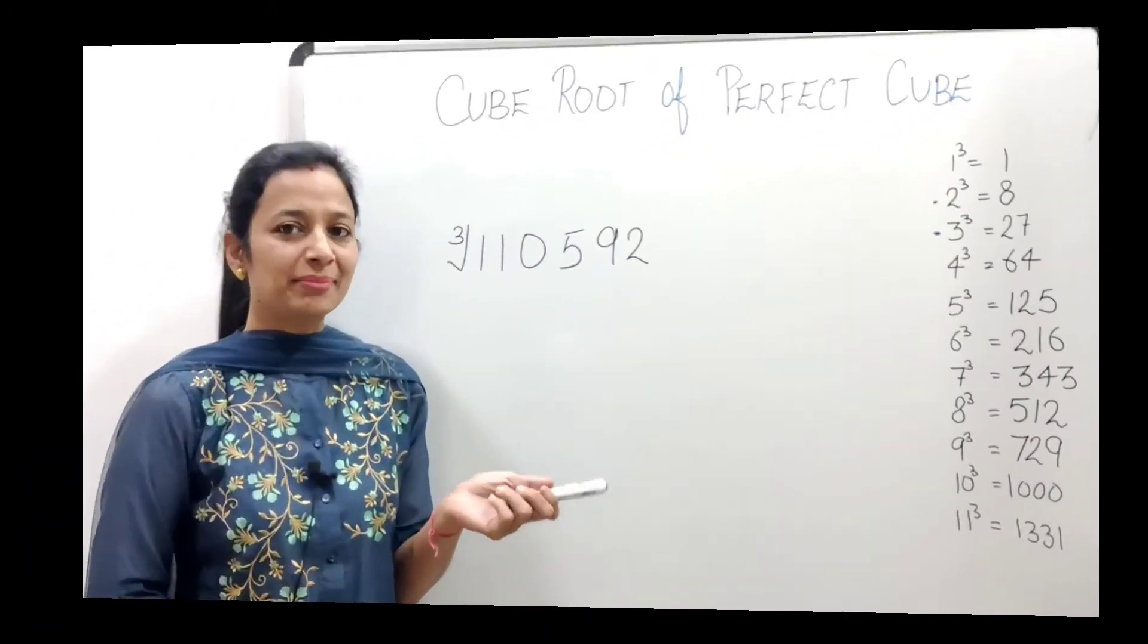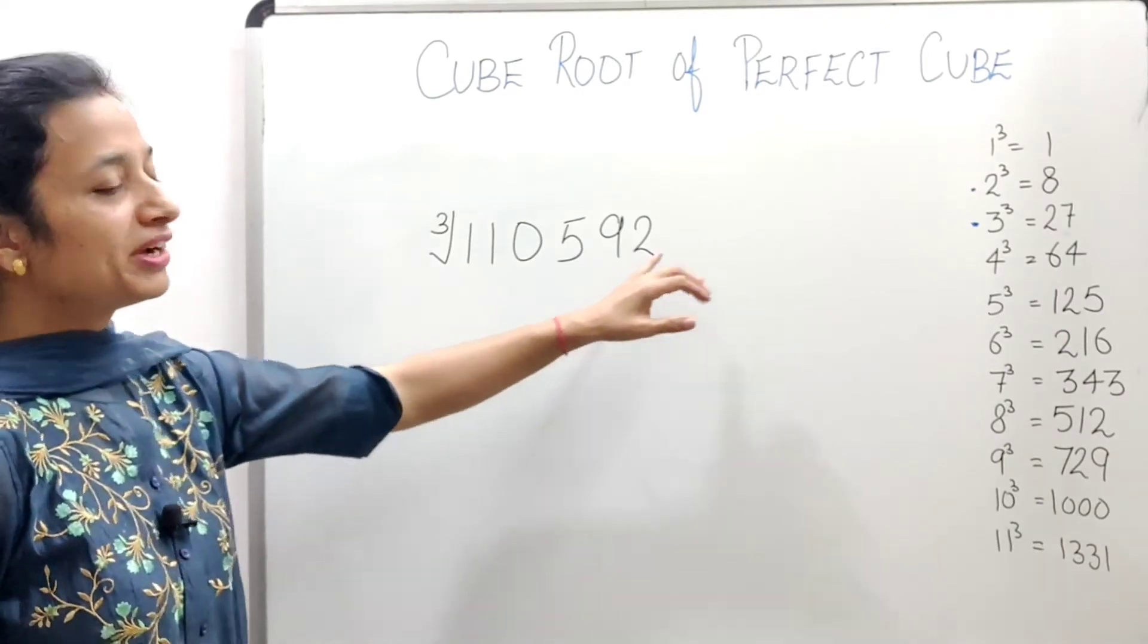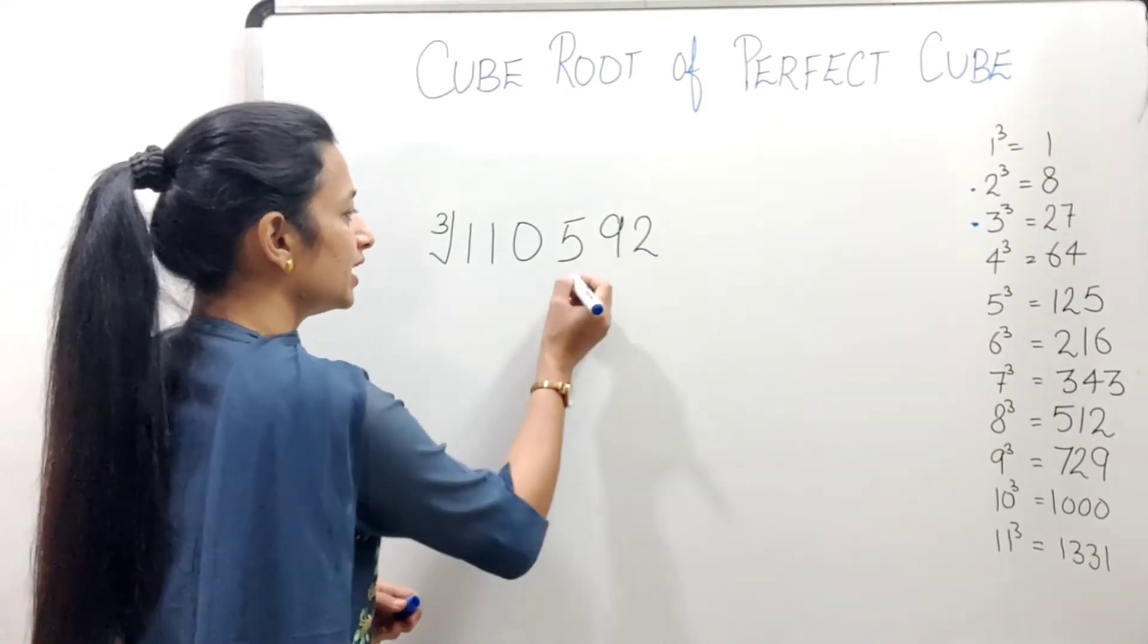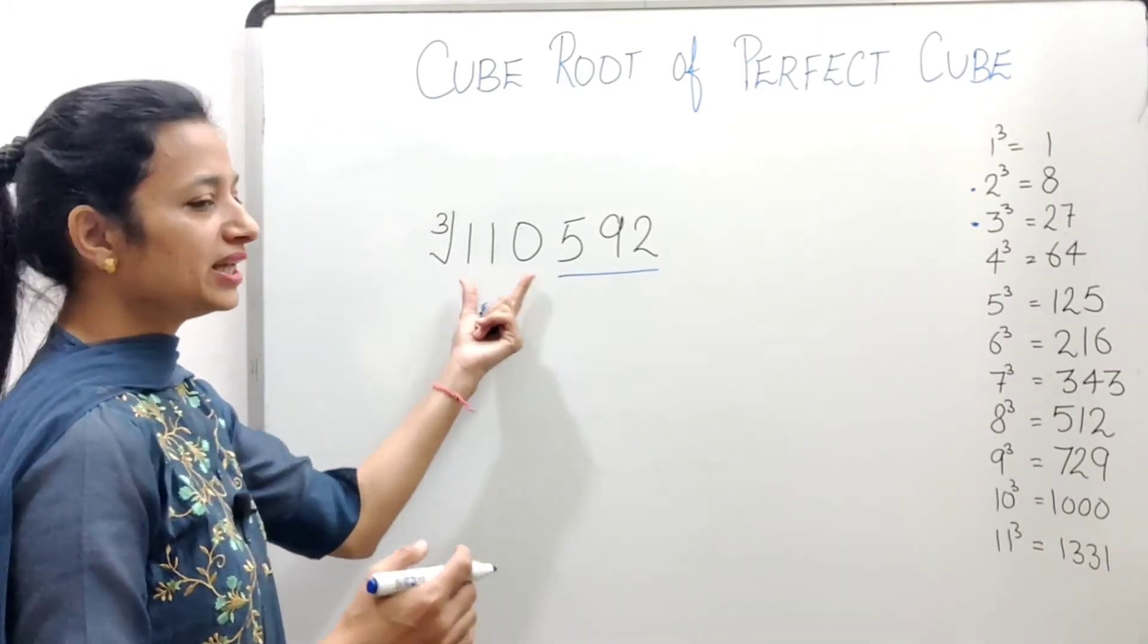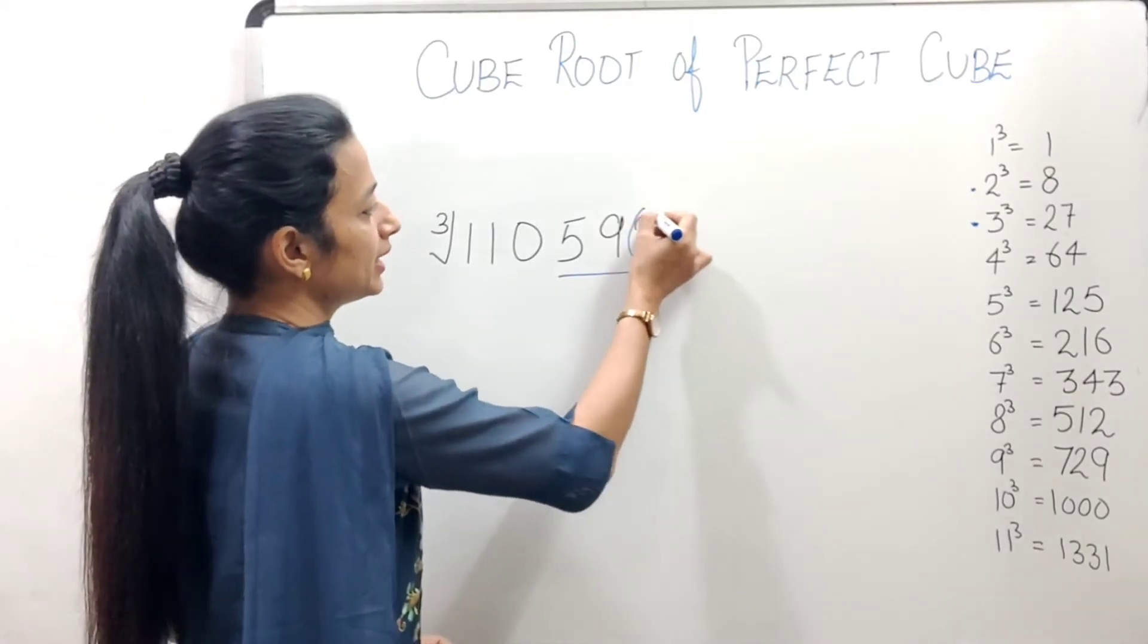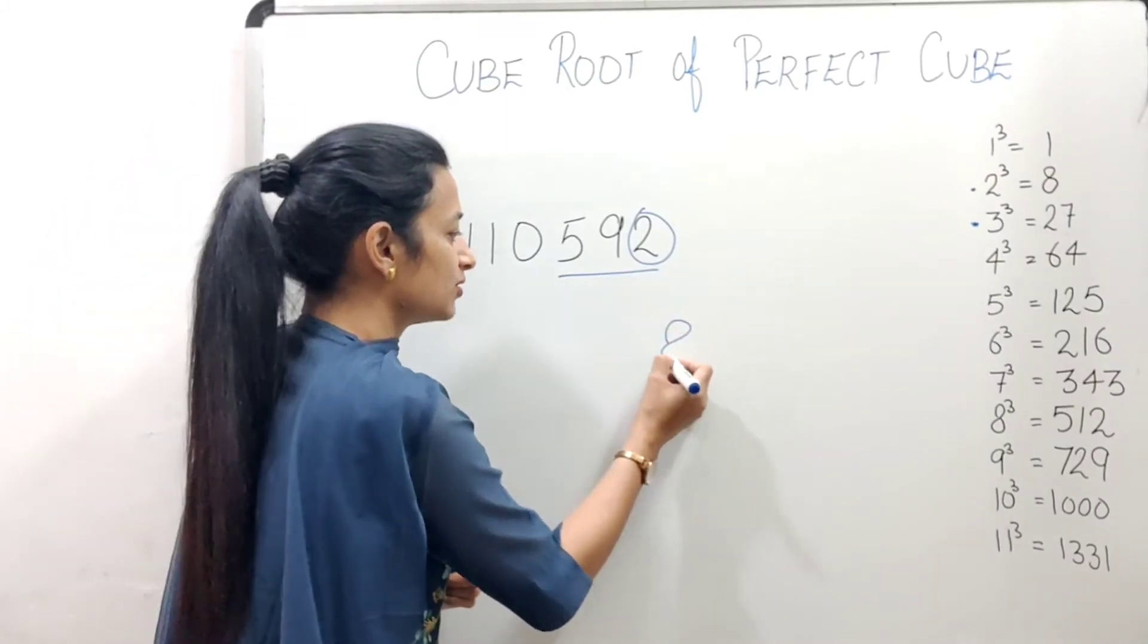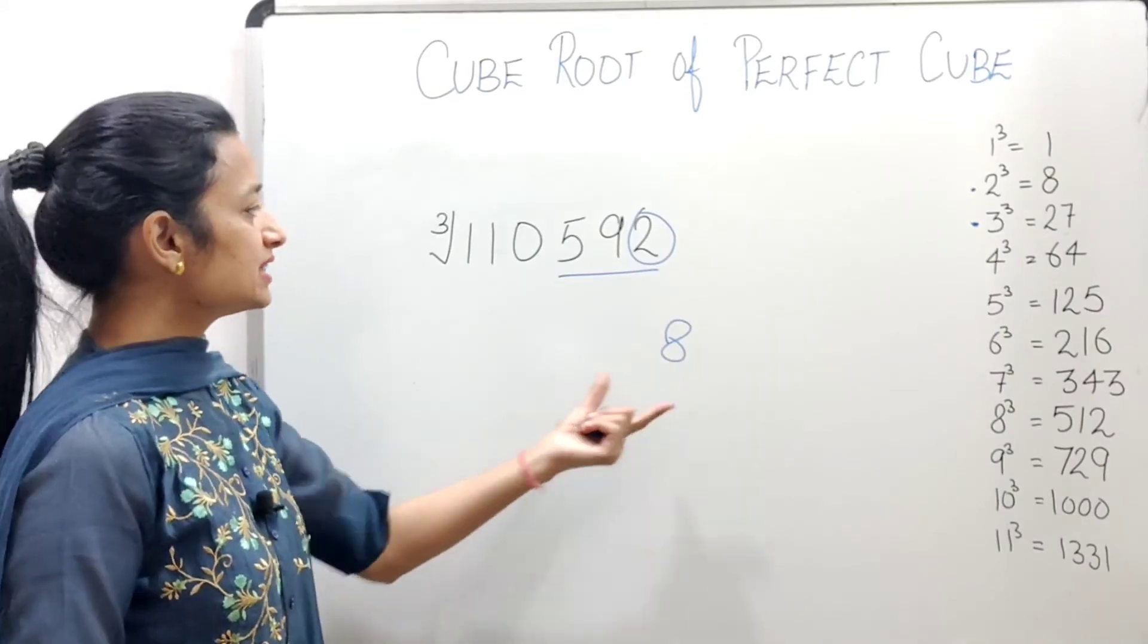Now, next example. We have to find cube root of 110592. Again, we will do grouping. So grouping is done - 592 will be in one group, and the remaining in the other group. Here, at the unit place, what is there? 2. And when we cube 2, what happens at the unit place? 8. Or we can say, 2 cubed is 8. So 8 comes in the answer.